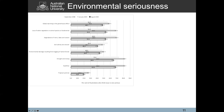Between January 2020 and August 2020 — which is on a longitudinal sample, so it's not due to biases in sampling — there were reductions in the proportion of the population who think these environmental issues are very serious. Particularly large reductions were found in those who said drought and drying or bushfires were very serious issues. So for Australia as a whole, we see an increase in environmental concern leading into the bushfire period, followed by declines leading into the COVID period.